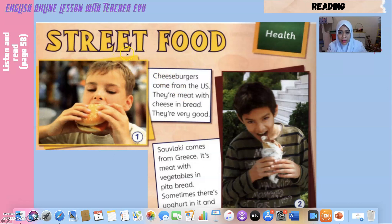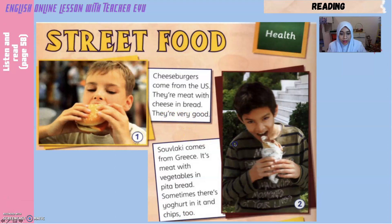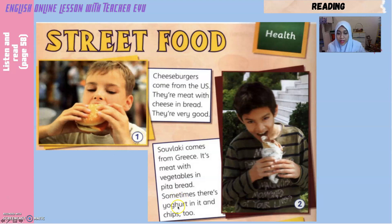Now boys and girls, let's discuss the text. Street food means makanan di gerai-gerai tepi jalan. Firstly, cheeseburgers come from the US — they're meat with cheese in bread, and they're very good. Number two, souvlaki comes from Greece. Inside the pita bread there is meat and vegetables. Sometimes there is also yogurt and chips in the souvlaki.